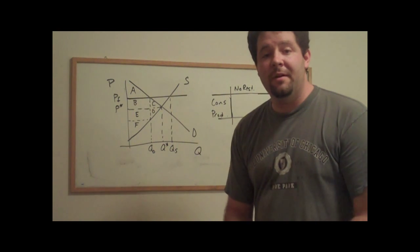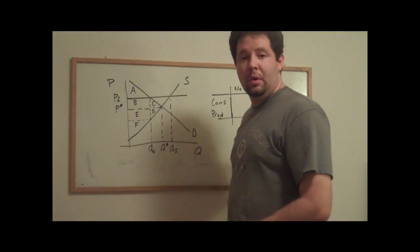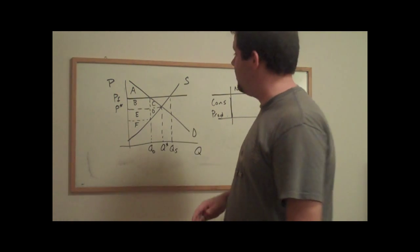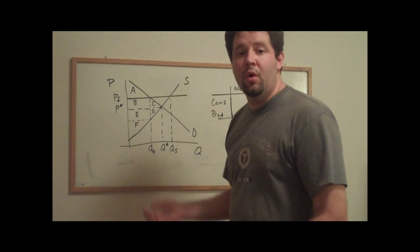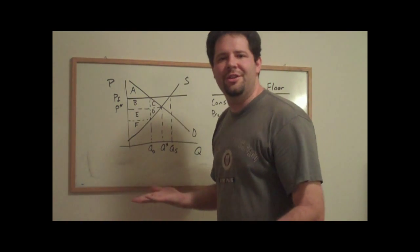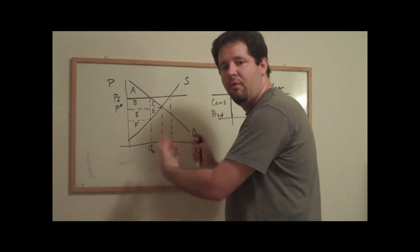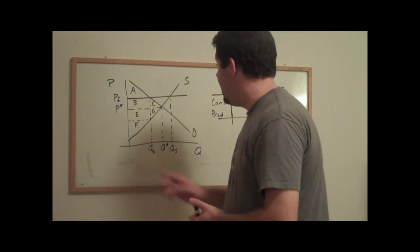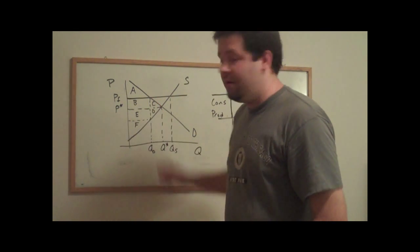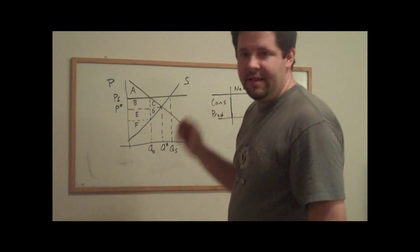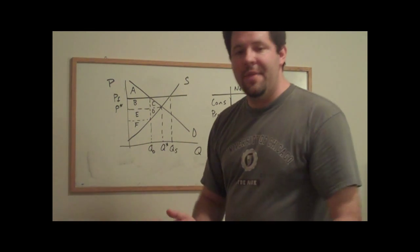Now let's consider the welfare effects and what actually happens when we impose a price floor, saying that the price cannot go below a certain amount. We're going to impose that price floor above the original equilibrium price because otherwise it wouldn't be binding. A lot of the intuition just follows through from what we talked about with the price ceiling. At the price where the price floor is set, the quantity demanded is going to come from the demand curve, and the quantity supplied will come from the supply curve.